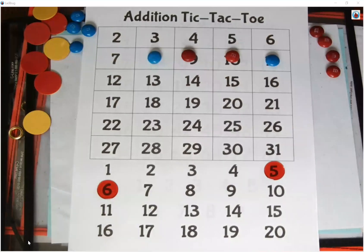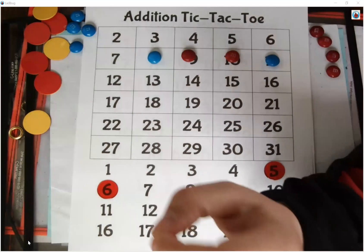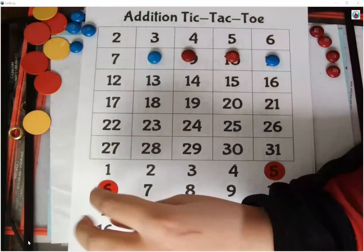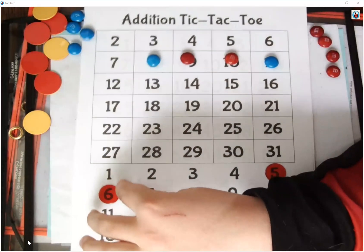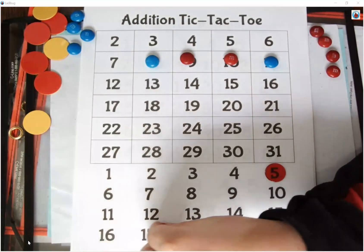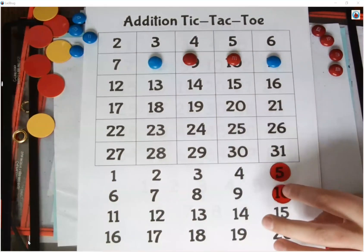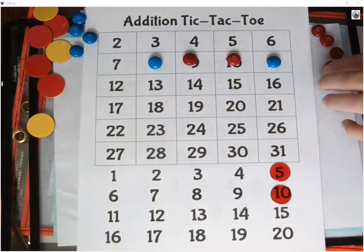Brett's turn, and he gets to move either the five or the six. It's up to him. He's thinking hard. Ten plus five equals fifteen. So he did ten plus five equals fifteen.